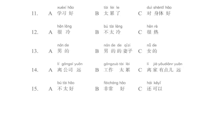十三：你们家谁做饭做得好？我做的还可以，我妻子做的比我好吃。谁做饭做得最好？Who cooks best in your family? Mine is okay, but my wife's cooking is tastier than mine. Who cooks the best?